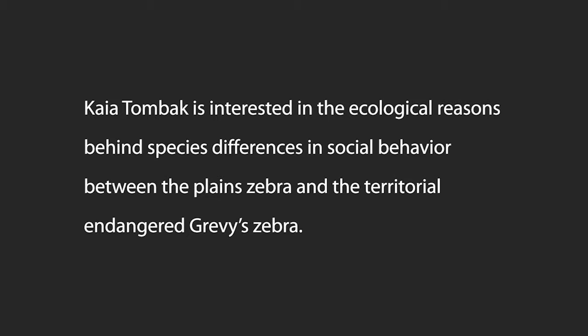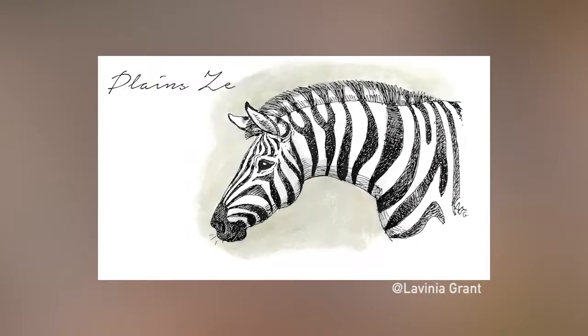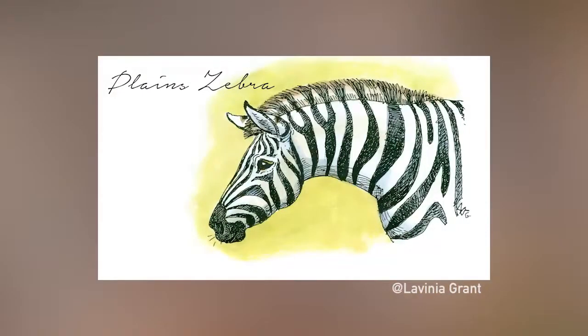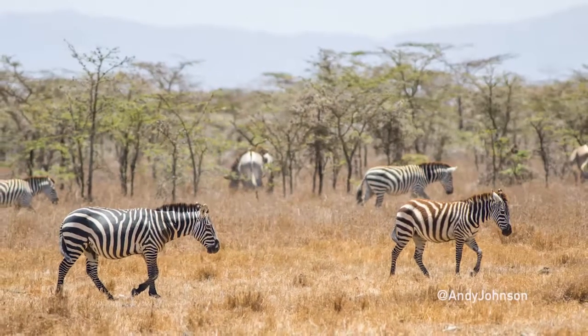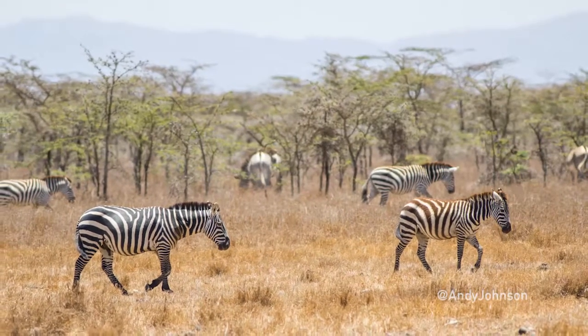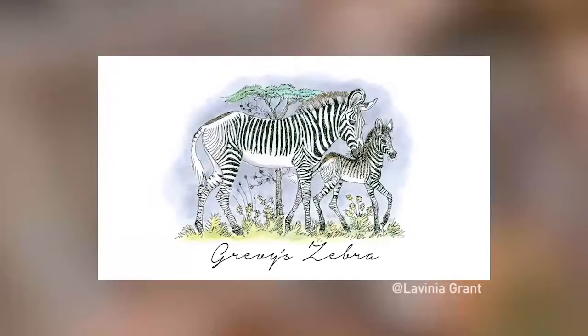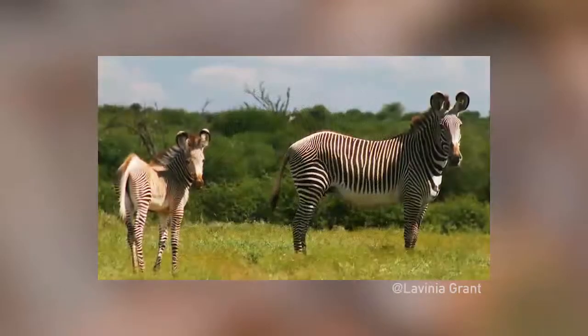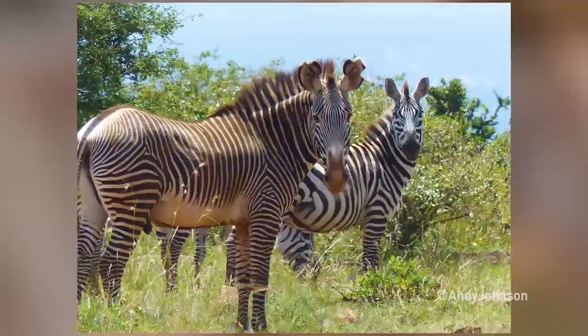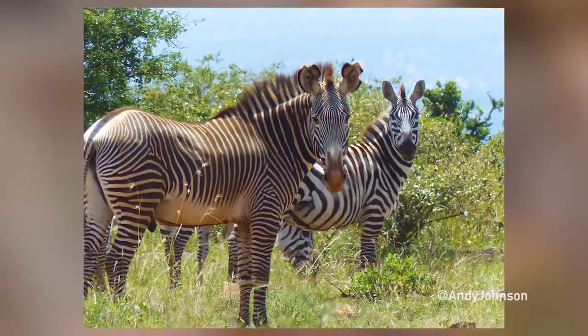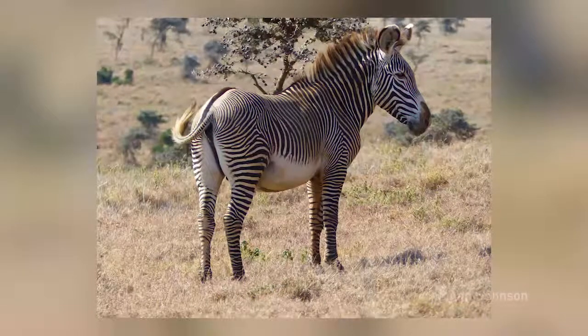Here in central Kenya we have two species of zebras. The plains zebra has fixed membership groups, meaning group membership doesn't change very often — they stay together on average three and a half years. But the Grevy's zebra, a closely related equid sharing the same habitat, is territorial with a fission-fusion society, so it's highly flexible. Groups of Grevy's zebras stay together on the order of just a few hours.